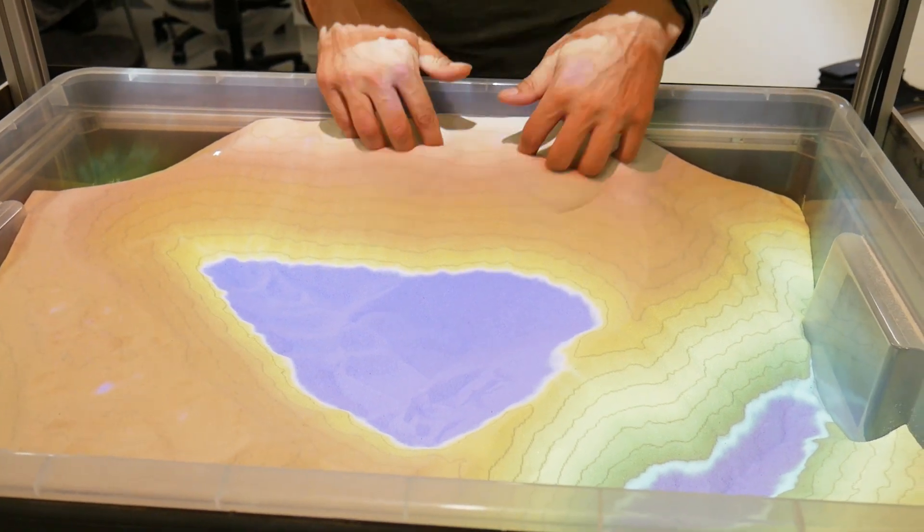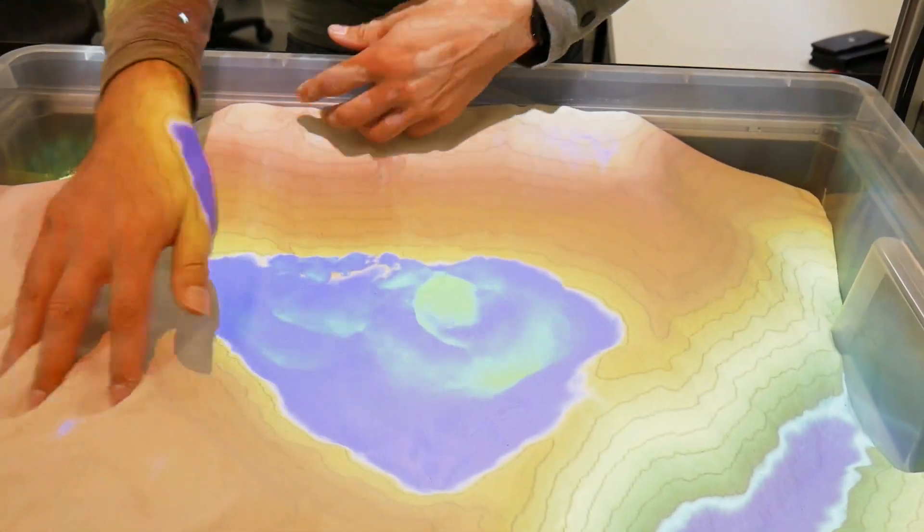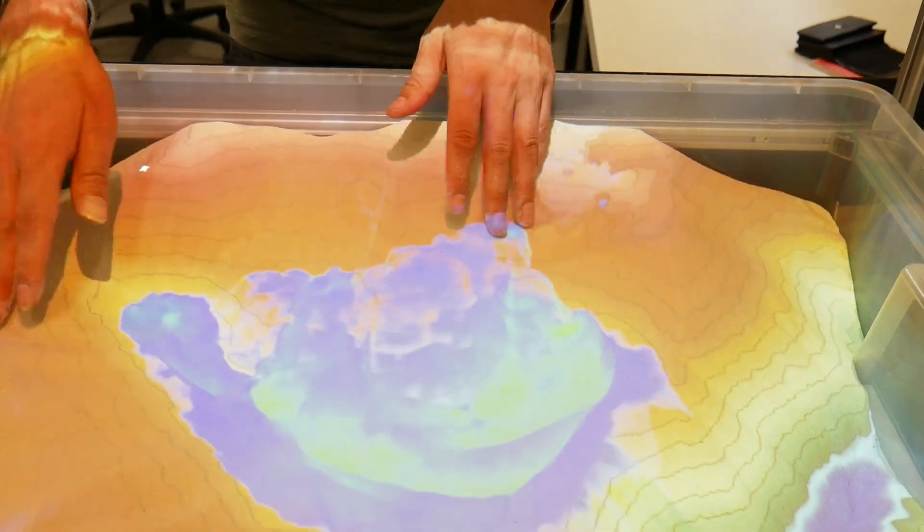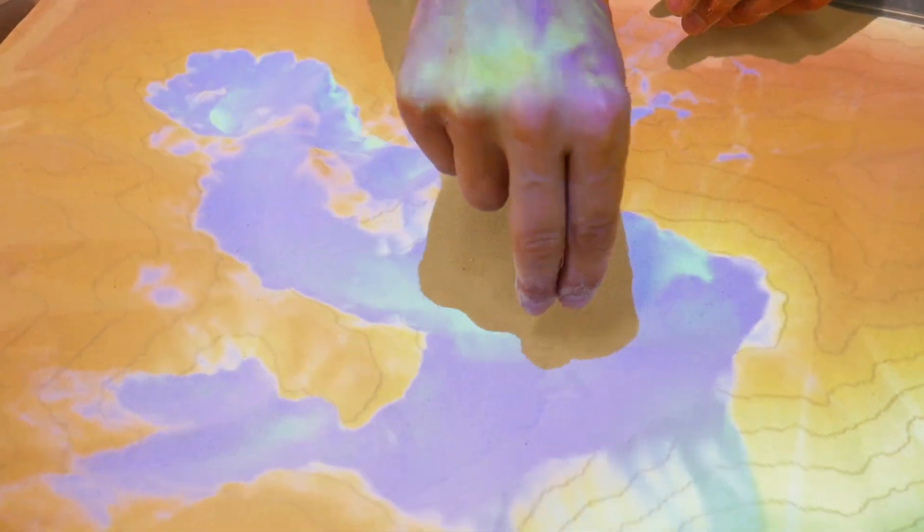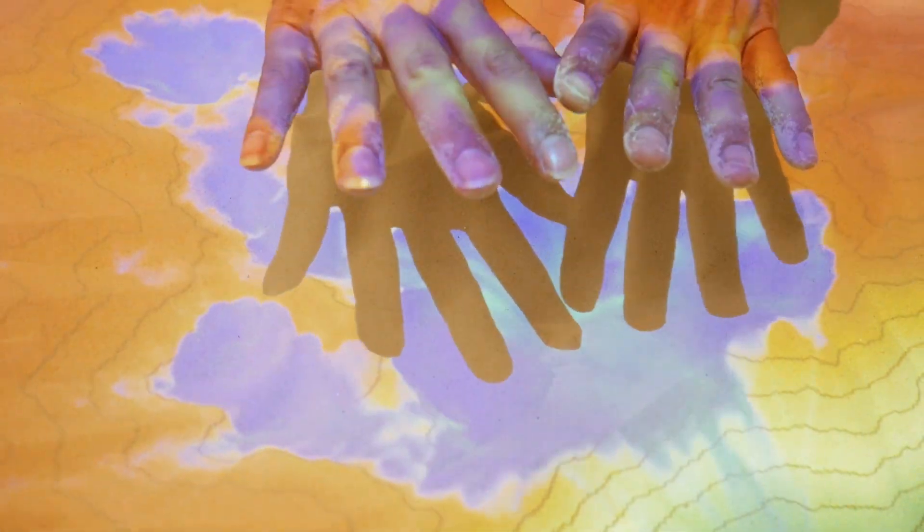So during the Cenozoic the Pyrenees are eroded until the Ebro Basin is full with sediments and it is at that time that the drainage, the lake inside the basin is overtopping towards the Mediterranean and then causing the erosion along the outlet that you can see now better with these green colours.